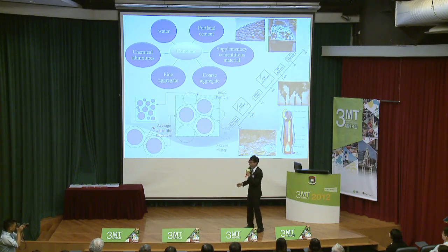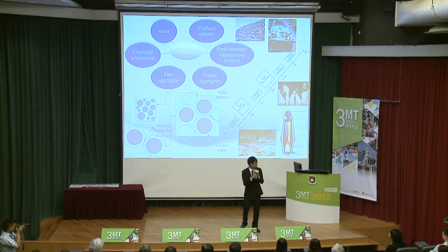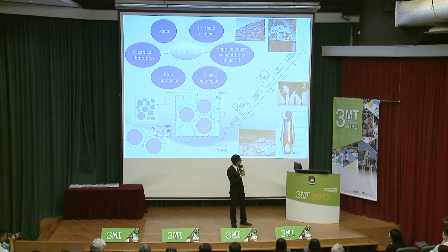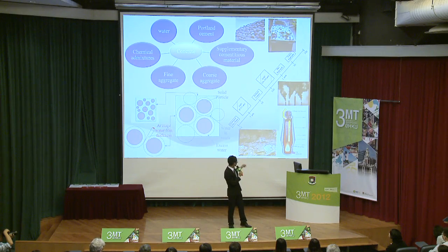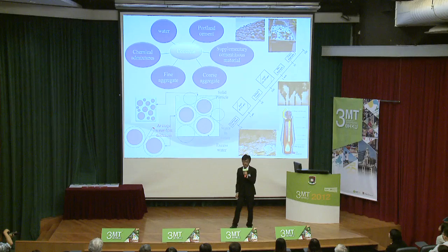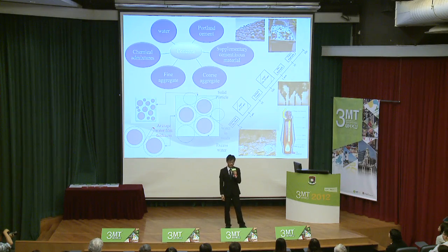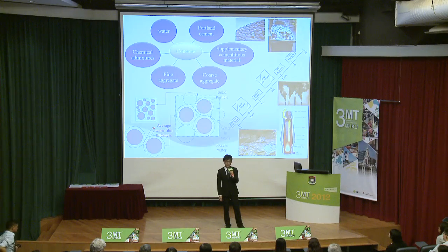Let's look at the origins of some supplementary cementitious materials here. The fly ash from power plants, the slag from the steel industry, and silica fumes from the semiconductor industry. All of them are industry by-products. Now we find their values in concrete.